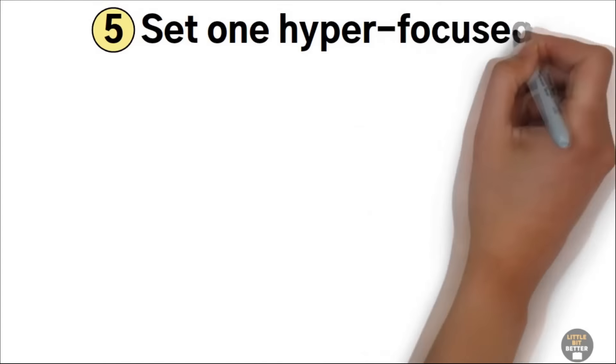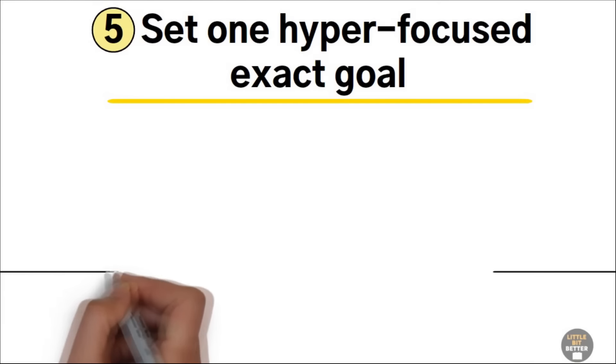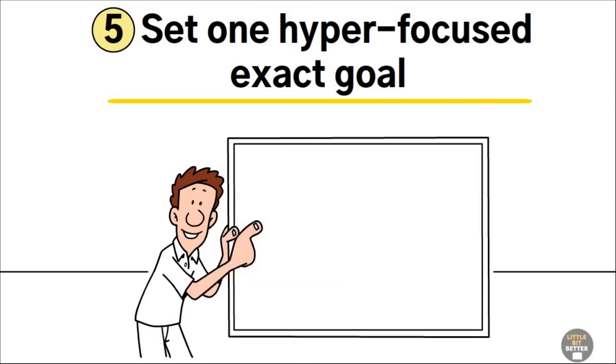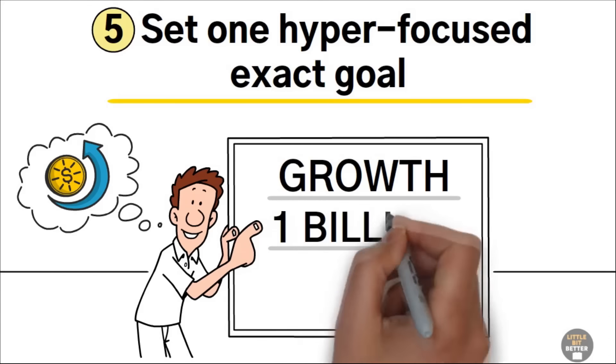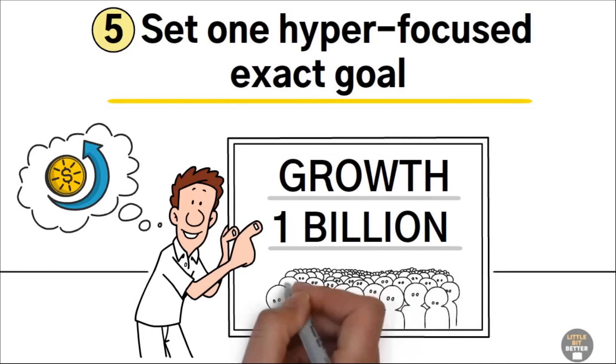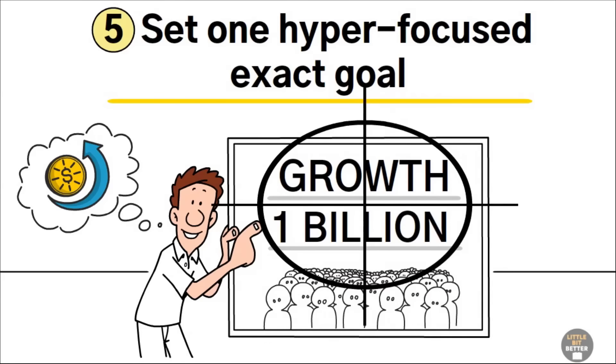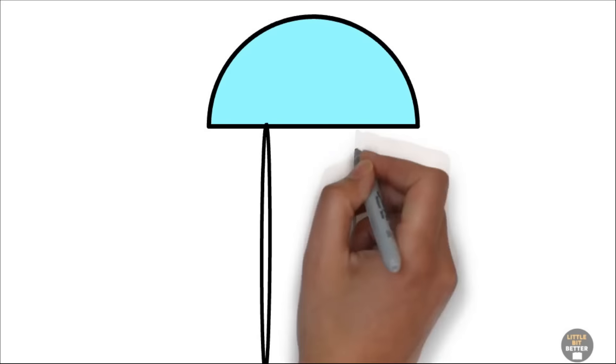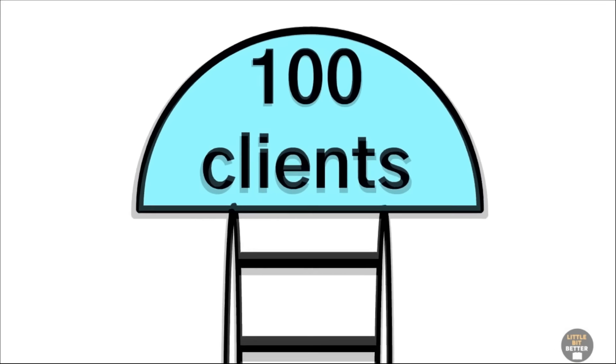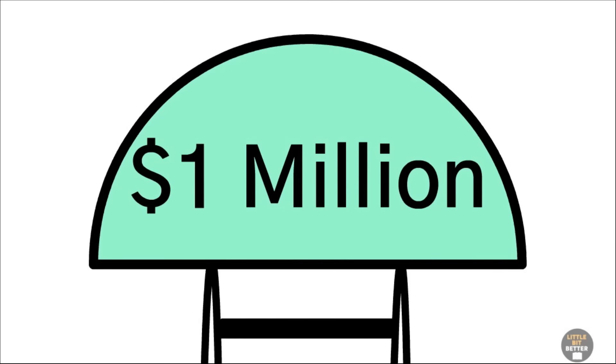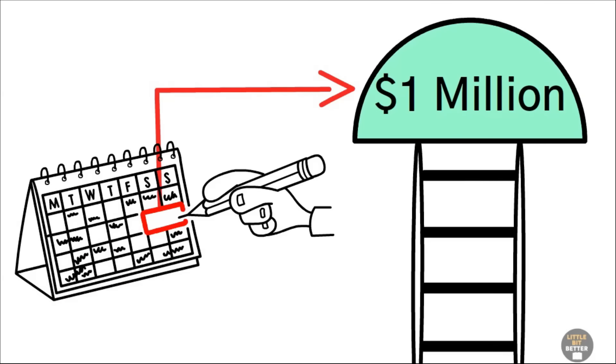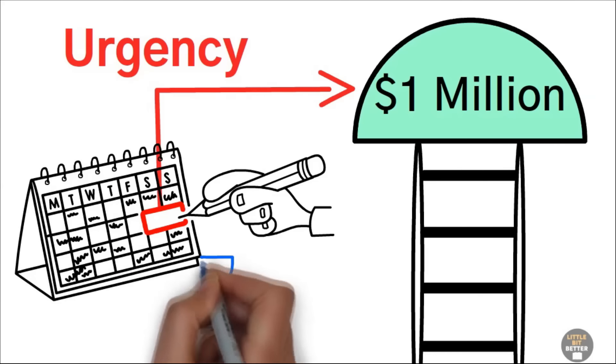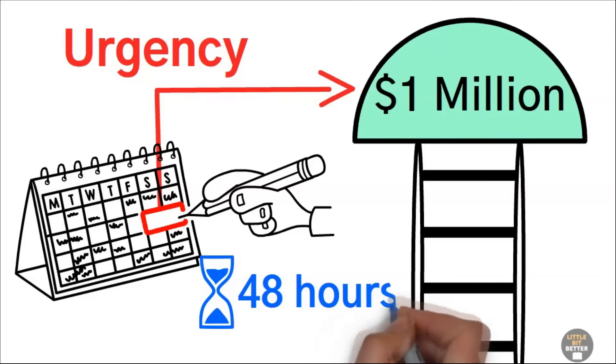Five, set one hyper-focused exact goal. When Noah worked at Facebook, Mark Zuckerberg pulled him into a conference room. They needed to make money or else he was worried the company would fail. Mark wrote one word and one number on the whiteboard. Growth, one billion. His goal was for Facebook to have over a billion users. Nothing else mattered to Mark. Pick one number, one goal, and work towards that. It could be working with 100 clients, making $1 million in revenue. It has to be specific and tied to one single number. Then add a time frame to achieve this goal. Without a time frame, there's no urgency. This is why the million-dollar weekend is tested in 48 hours and not in 48 months.